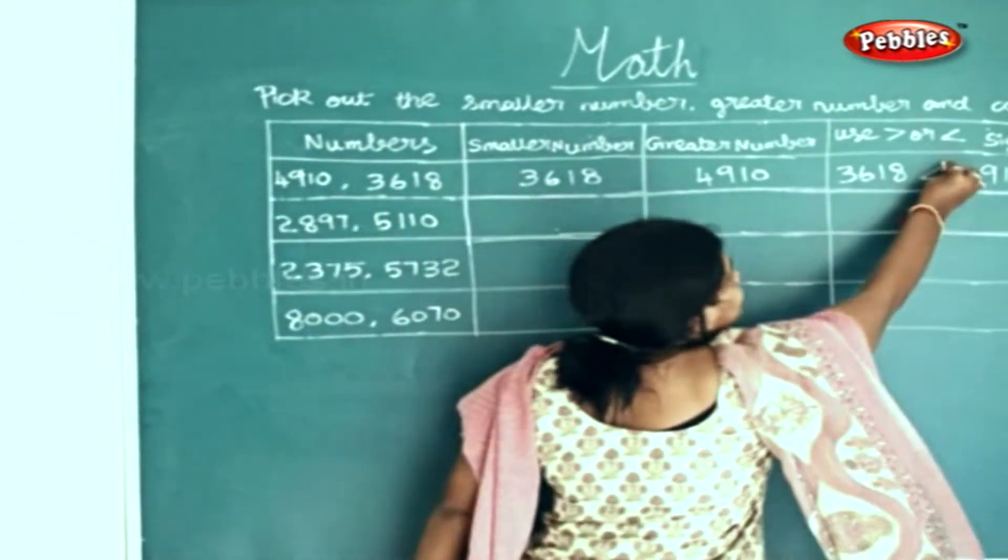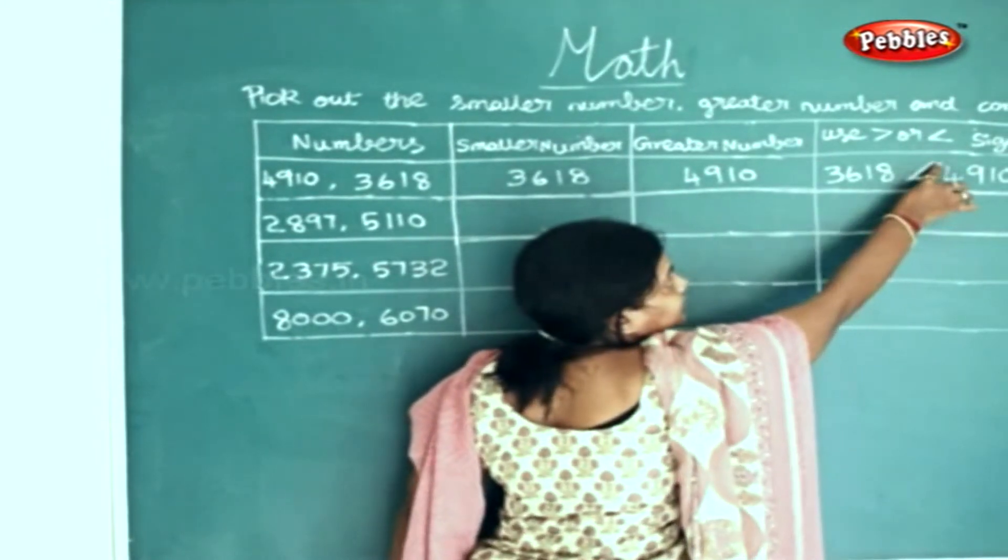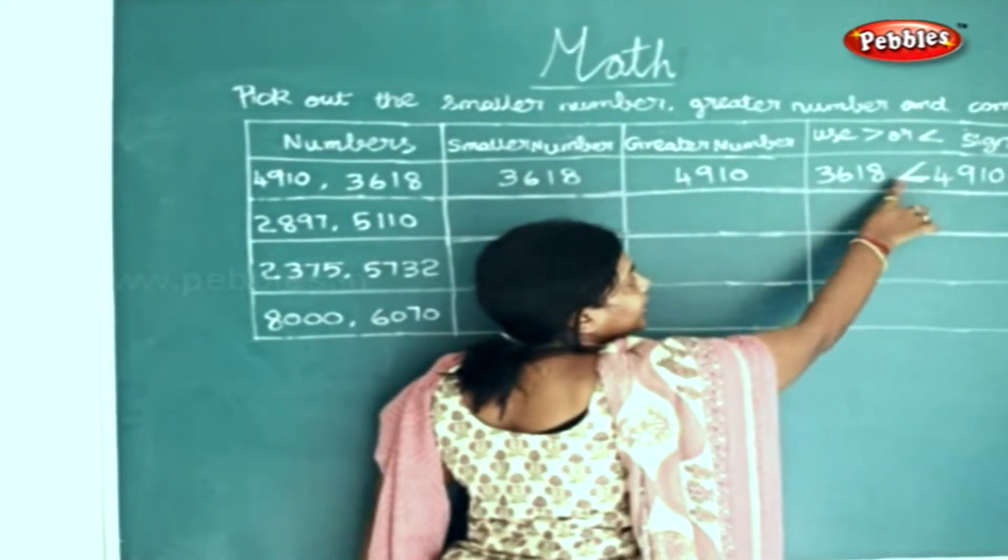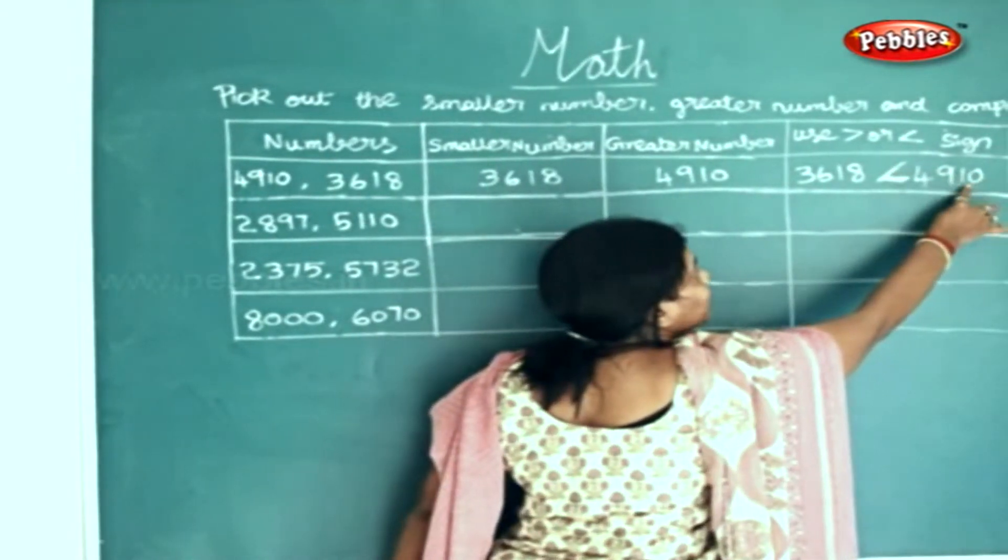So this is greater. For the greater, the mouth goes big. Since it's greater, 3618 is greater than 4910.